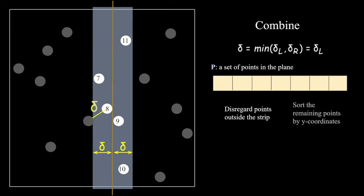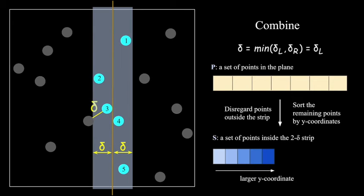And for those points within this strip, we reorder them based on their y values. This is not the end of the trick though, because we could still have a large number of points within the strip.